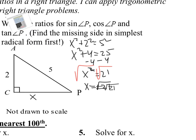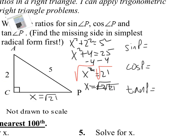Now we have a side of square root of 21. Using SOHCAHTOA again — sine is opposite over hypotenuse. Starting at angle P, the opposite is 2 and the hypotenuse is 5, so sine is 2 fifths. For cosine, adjacent over hypotenuse: the adjacent is square root of 21 and the hypotenuse is 5, giving square root of 21 over 5. For tangent, opposite over adjacent: 2 over square root of 21.